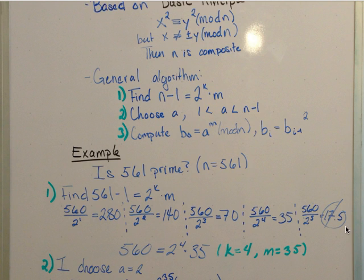And then I just take the one before that, since I wanted an integer, but I also want the largest k I can find. So I found that 560 over 2 to the 4th equals 35, which implies that 560 equals 2 to the 4th times 35. In other words, k equals 4 and m equals 35.